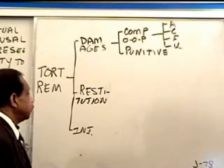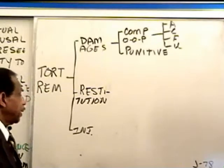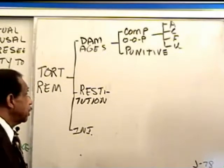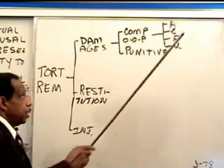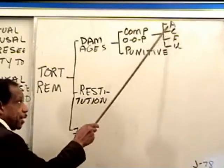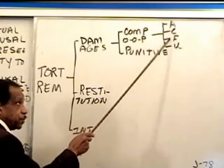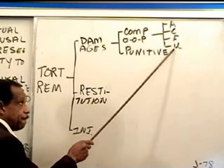That's what we have about damages in the case of tort law. We need to come back and talk about actual, causal, foreseeable, and unavoidable — and we will.